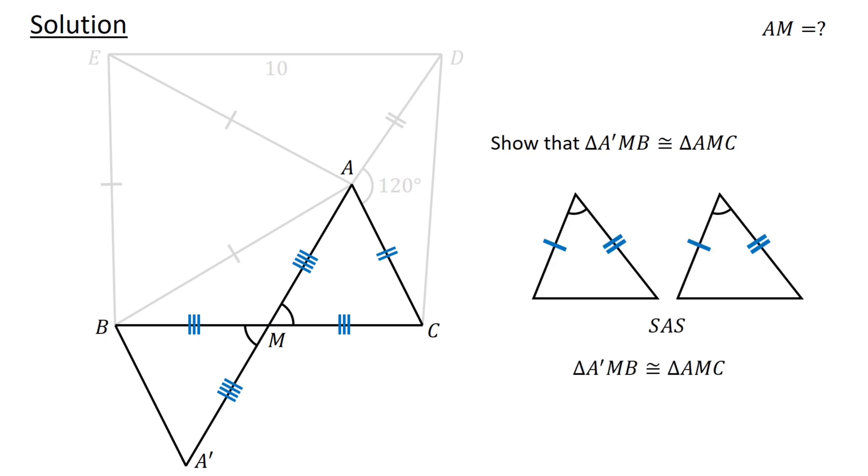By the SAS congruency test, the two triangles are congruent. As BA' and CA are corresponding sides in congruent triangles, BA' equals CA.